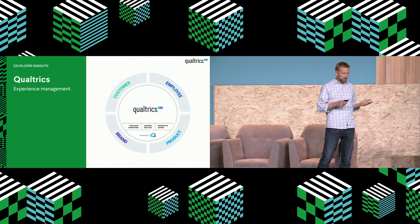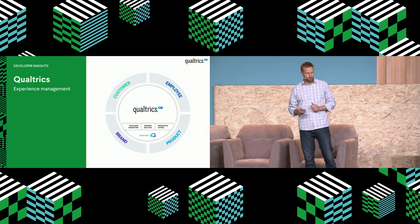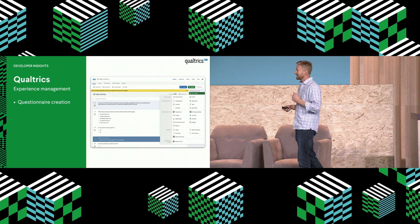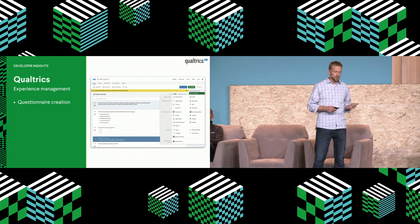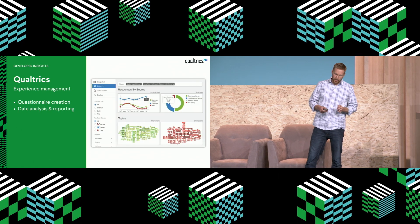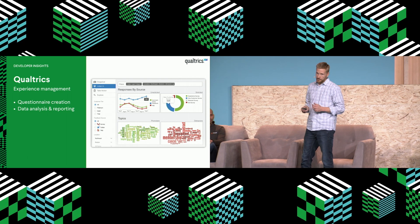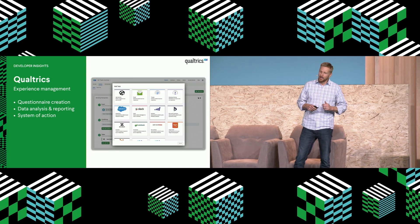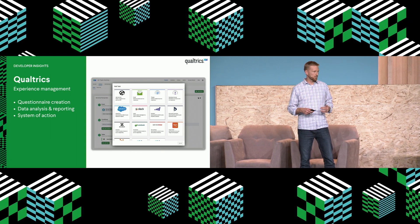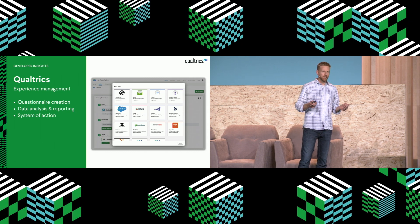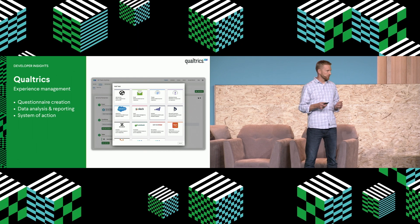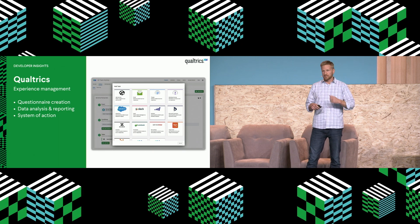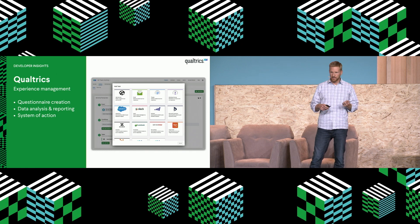To thrive in the experience economy, companies need to build systems of action that intelligently use X data and O data to manage the four core experiences: customer experience, employee experience, brand experience, and product experience. The XM platform we provide enables companies to do just that. We have a powerful survey editor, data analysis and reporting including topic and sentiment analysis and role-based dashboards, and tools to take action through workflows and integrations. For example, if an IT department gets a negative CSAT score, you can set up a workflow that automatically opens the ticket, pings it to a Slack channel, escalates to management, and monitors against predefined SLAs.